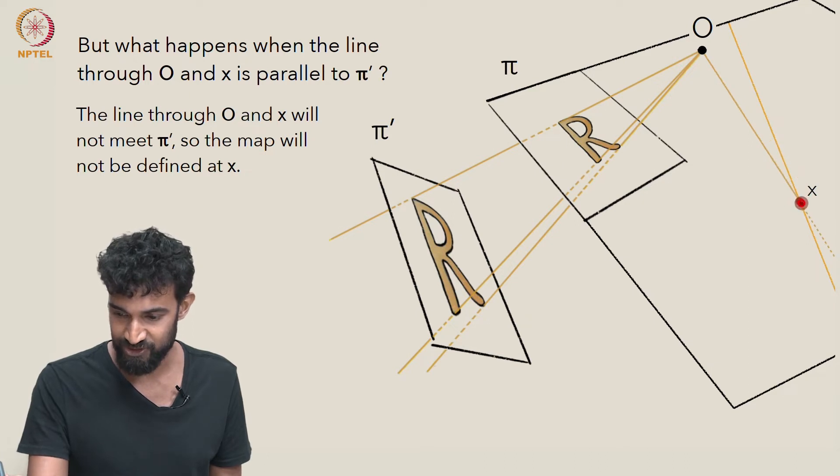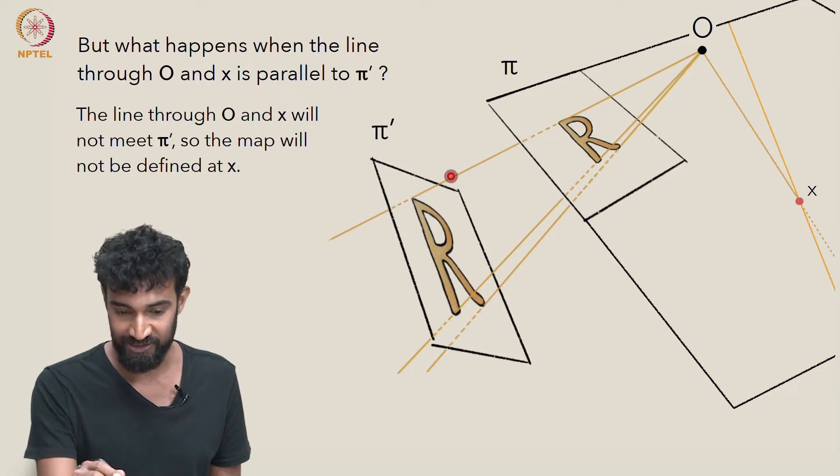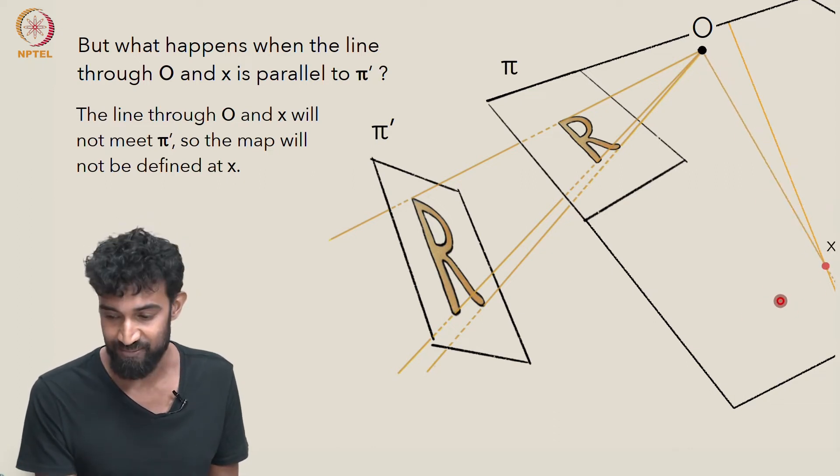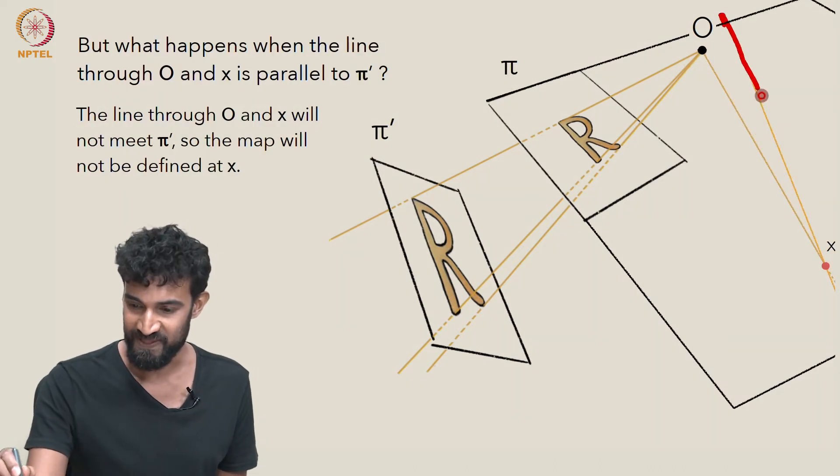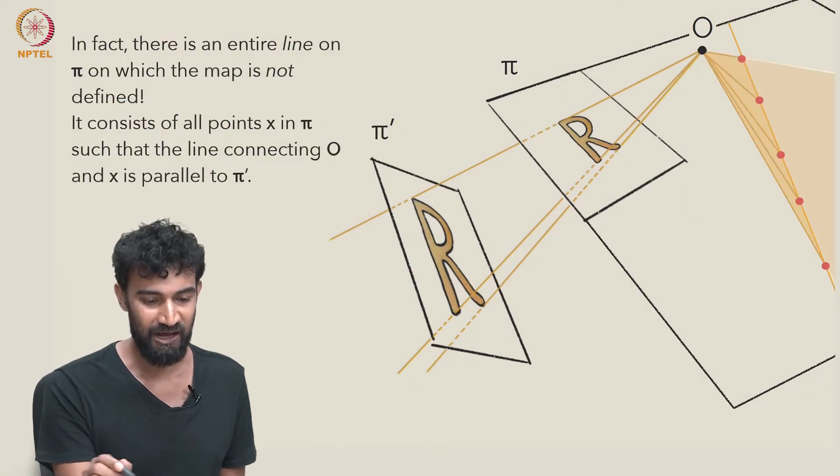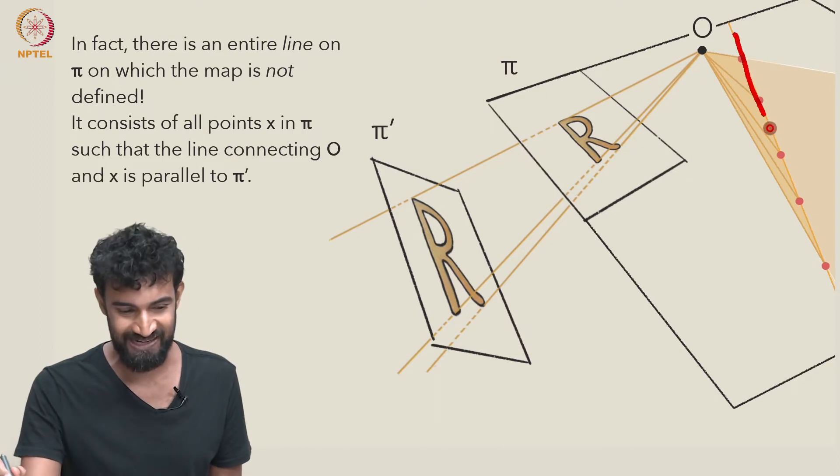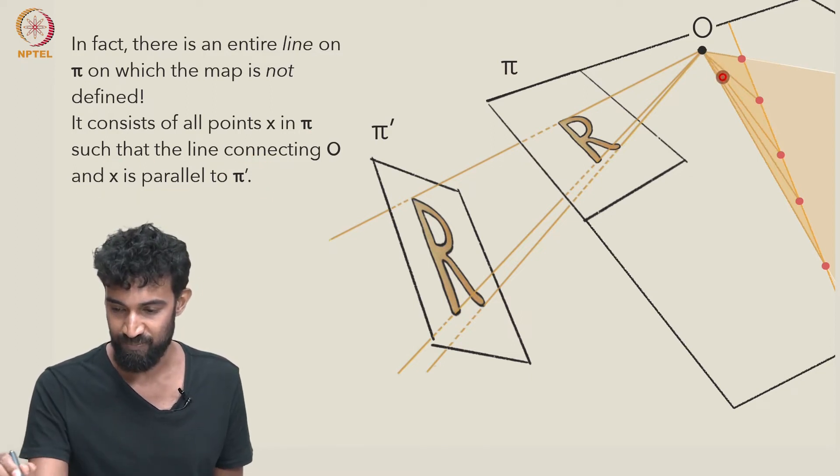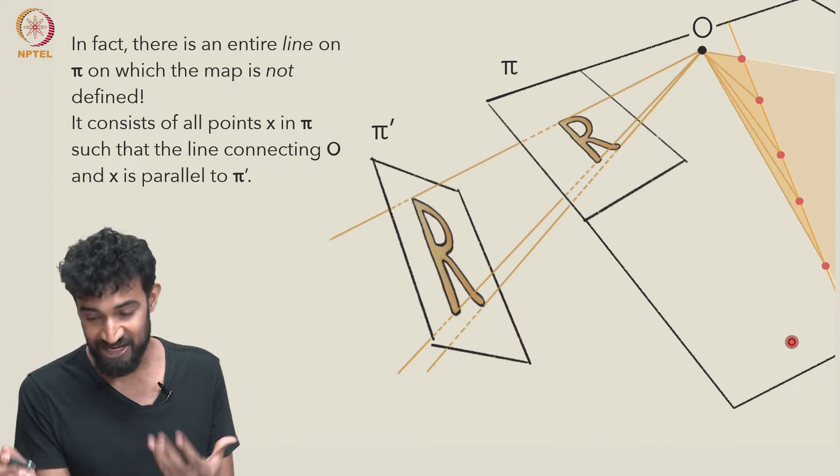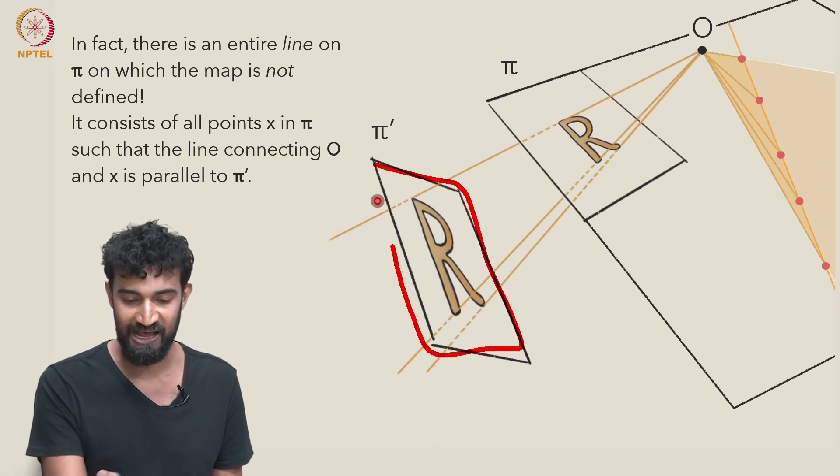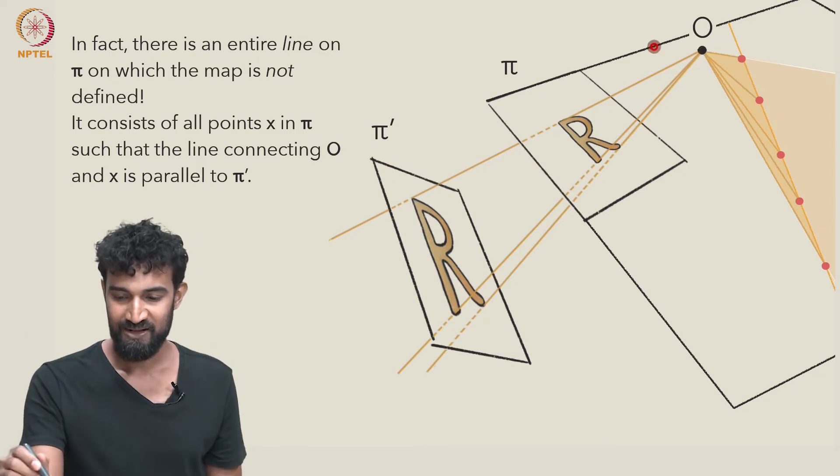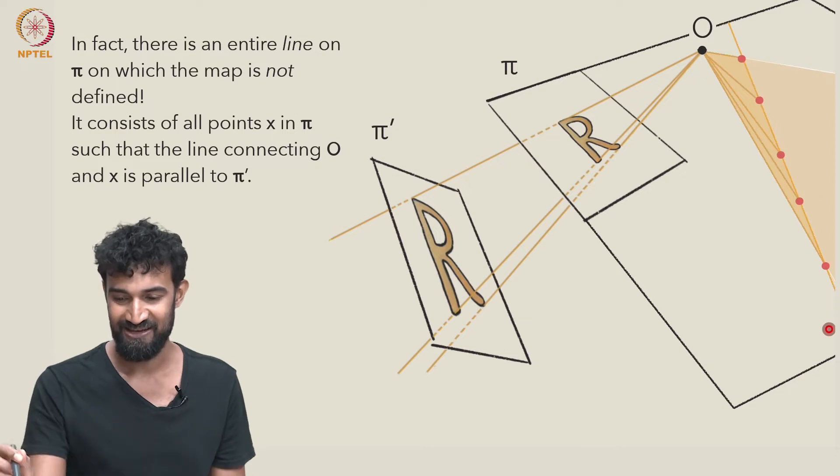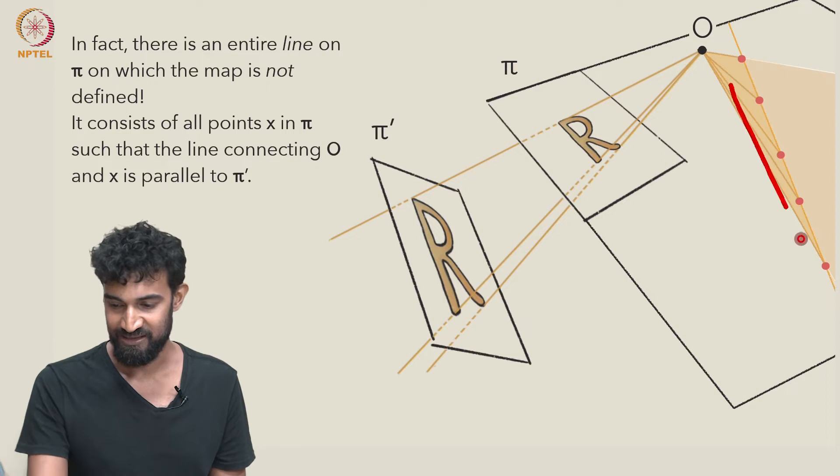That was this x, but we can also just look at another x over here, which is such that Ox is again parallel to π'. Or a point x over here, again Ox is parallel to π'. There's multiple choices of x such that Ox is parallel to π'. In fact, there's an entire line, this line here, on π, on which the map γ is not defined. What is this line? Well, it consists of all the points x in π such that the line connecting O to x is parallel to π'. Another way of arriving at it, or imagining it, it's just the line we get if we were to translate π' through space so that it passes through O. So that translation of π' up to O is going to hit π at a line, this line here.